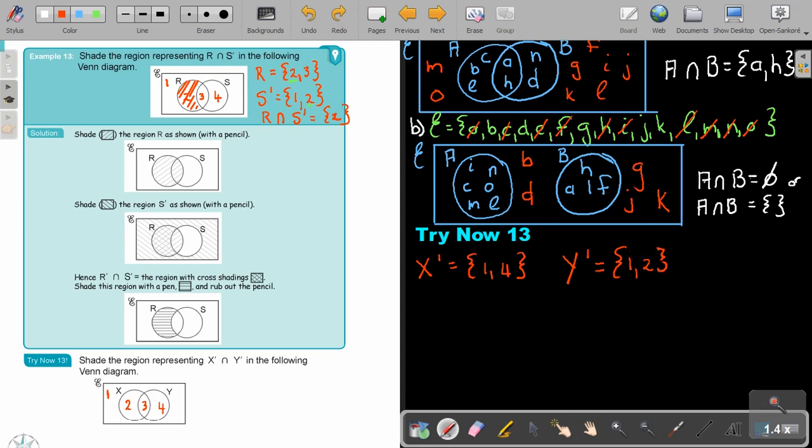And then I'm going to say X complement intersection with Y's complement. Now, what is in both? Now, if I look, I can only see that one is in both. Do you see that? So I will just shade, but one is representing this area. So you take your ruler. I'm doing the shading here. And then start shading. See if it's on the ruler.